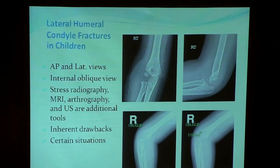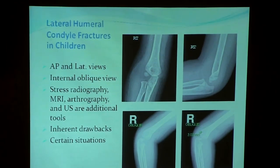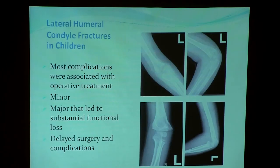The internal oblique view is now established as very important in the initial evaluation of lateral condyle fractures. Some people recommend stress radiographs, MRI, and arthrography, but each has inherent drawbacks and they cannot be used in emergency situations. Only in certain situations, like in children less than two years of age, can arthrography be used. Most complications are associated with operative treatment, but most are minor; major complications lead to substantial function loss, which is why we must avoid them by avoiding delayed surgery.